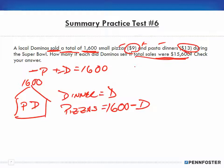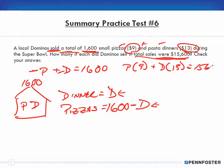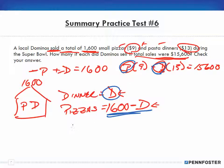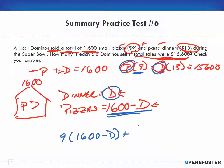Now that we know D for dinners and 1600 minus D for pizzas, we come back to our equation. We have pizzas at $9 plus dinners at $13, and that equals $15,600. We replace the pizzas with 1600 minus D, and that's times $9, plus we use the variable D for dinners at $13, and that equals $15,600. Then it's just a matter of doing the math.